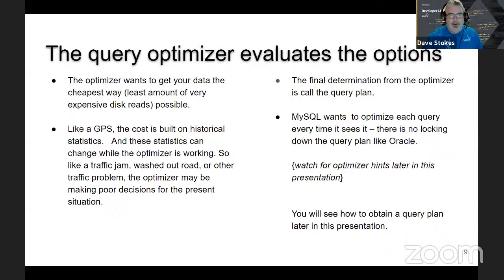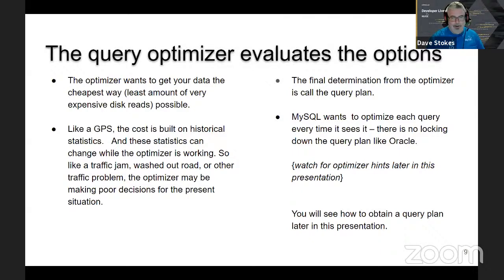The optimizer wants to look at every option — you give it a query, it tears it apart and says: I know where this piece of information is, what's the shortest way between them? It's kind of like a GPS — it's built on historical statistics, which are great, but if a train is parked across the tracks or a water leak has flooded the road, the GPS doesn't know that. Historical information is great but doesn't always help if you're adding or changing a lot of data. MySQL wants to optimize each query every time it sees it — there's no locking down the query plan like Oracle. Look for optimizer hints later if you want something like that.